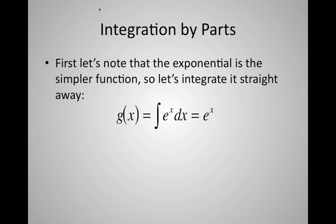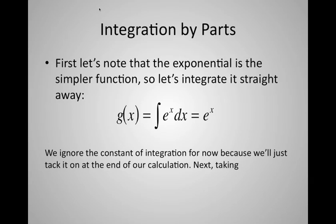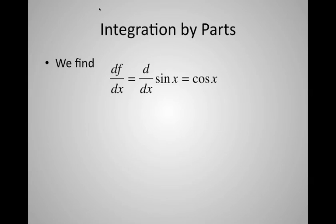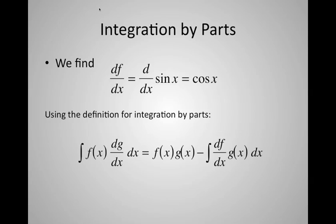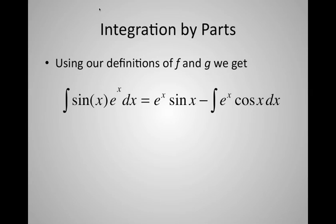The exponential is simple to integrate: the integral of eˣ is just eˣ back. We ignore the constant of integration until the end. So with f(x) = sin(x), taking that derivative gives cos(x). Using the integration by parts definition — integral of f·(dg/dx) = f·g minus integral of (df/dx)·g — we get: integral of sin(x)·eˣ = eˣ·sin(x) minus integral of eˣ·cos(x).